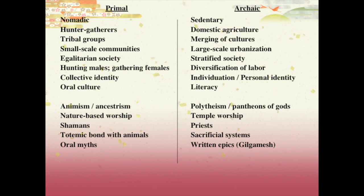Once humans learn how to make crops grow where they want and curtail the grazing range of animals so they don't have to track them for long distances, they can stay in one place — they become sedentary. Domestic agriculture means we've taken something and changed it to serve our purposes. There's a merging of cultures as many tribes come together to defend the city-state being founded. This is the birth of large-scale urbanization.